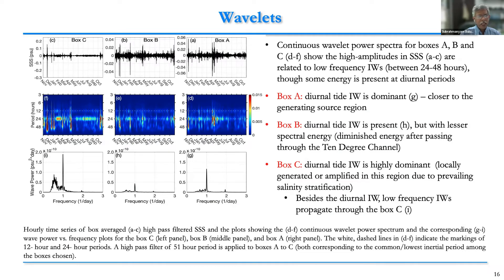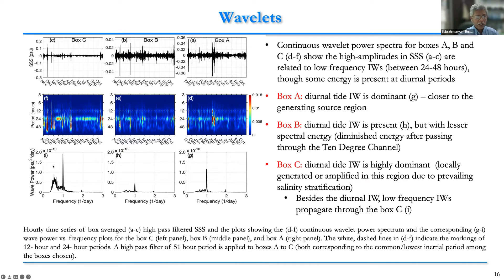Looking at boxes A, B, and C — focusing on the lower panel — box A in the generating region shows that the diurnal tide is dominant. In box B, the diurnal tide is still present but with diminished energy when passing through the 10-degree channel. Box C shows the diurnal tide is highly dominant, and other frequencies of internal waves are also propagating.